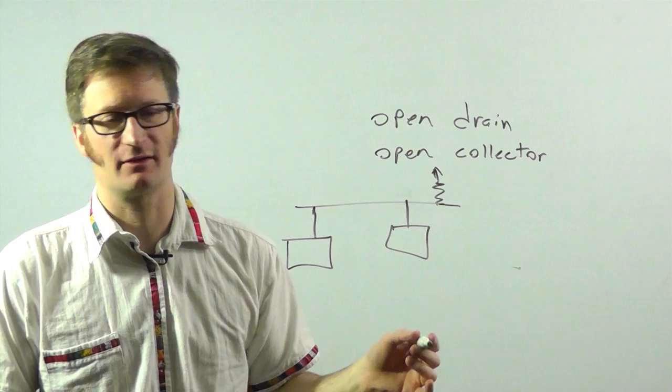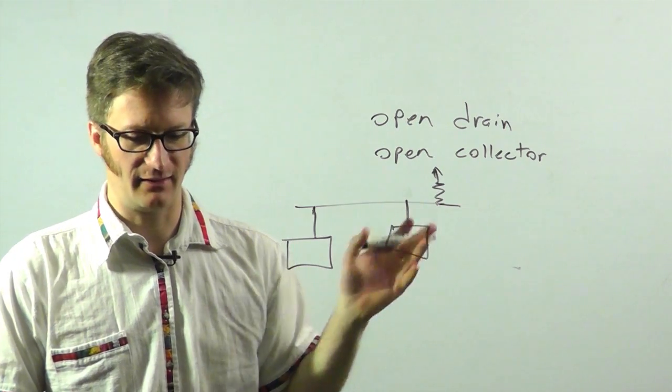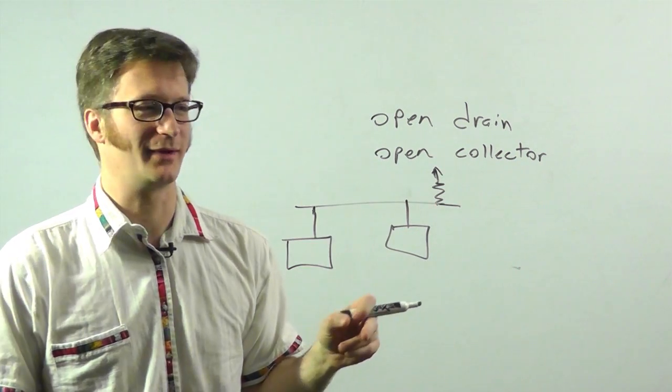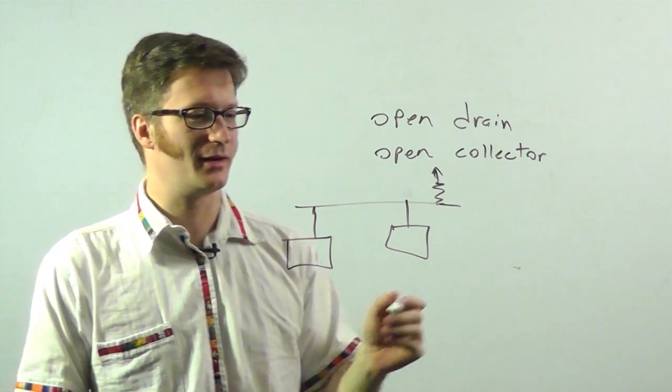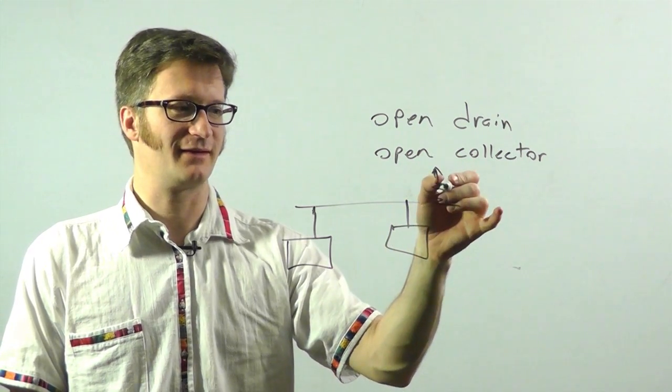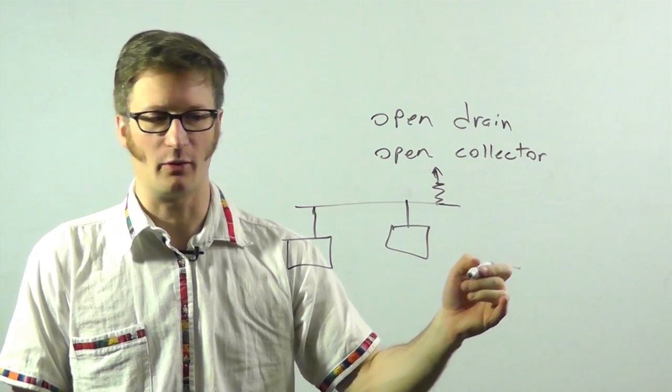So then when the transistor is not engaged or powered up, it is driven high. And when the transistor is enabled, it is a lower resistance than this and it draws the line low.